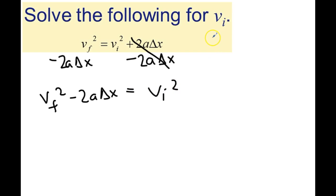But the problem says to solve for v subscript i. So you might recall from algebra that to unsquare a function, you have to take the square root. And if you're going to do it to the right side, you must do it to the left side.